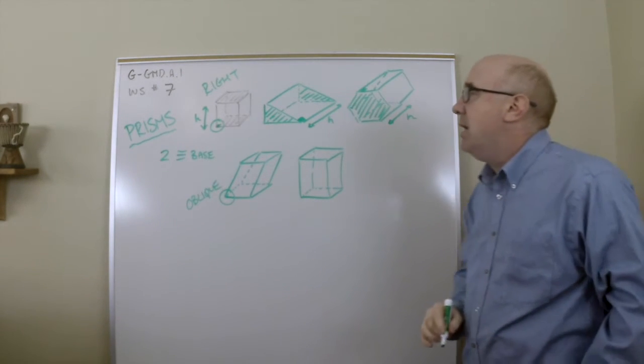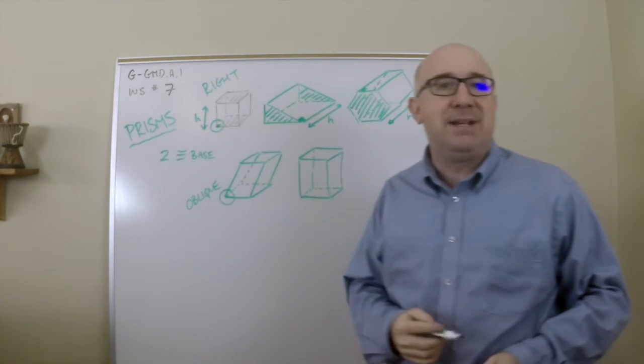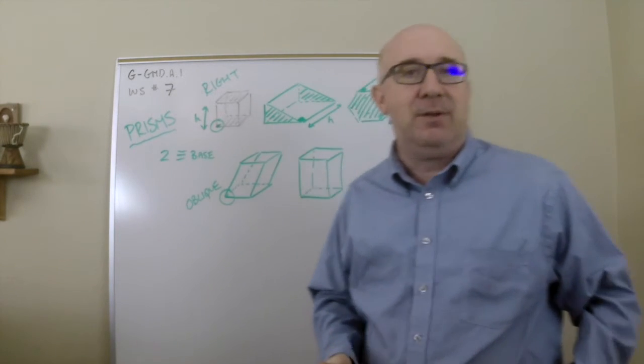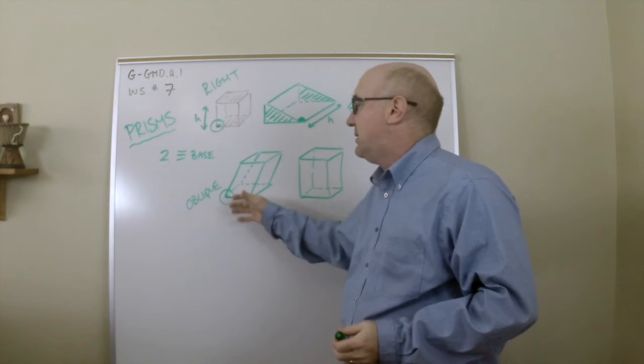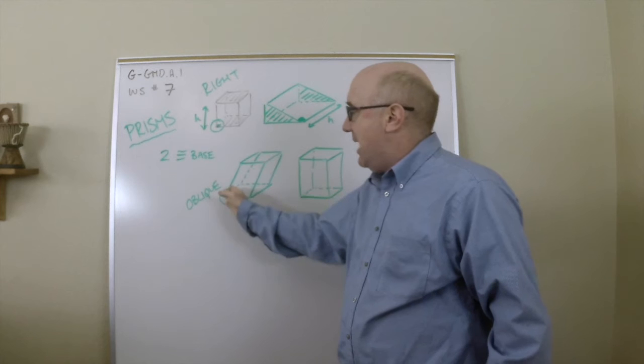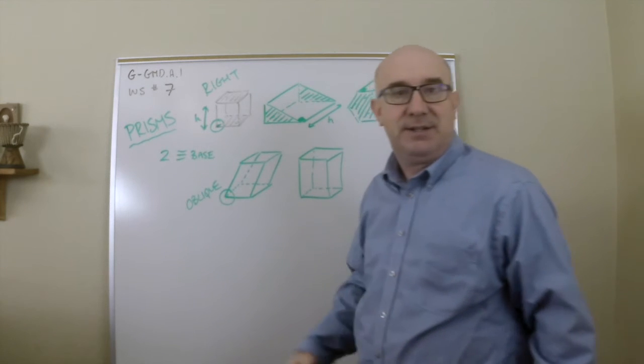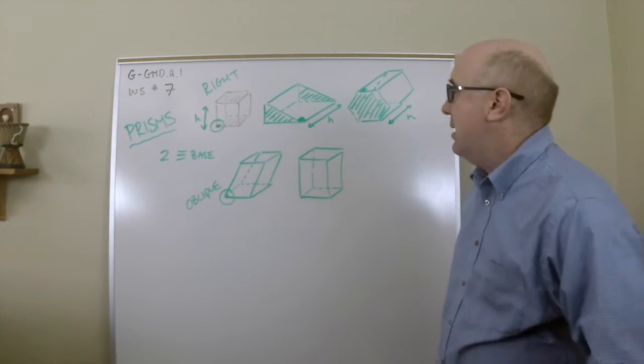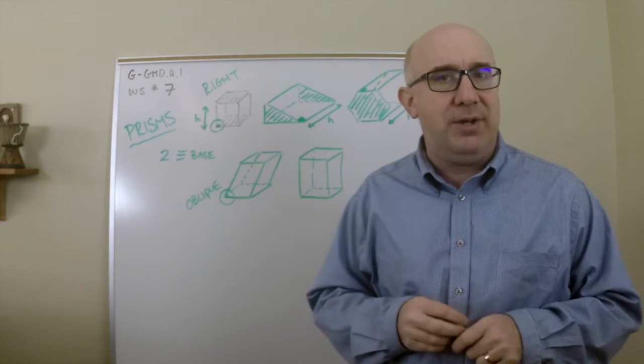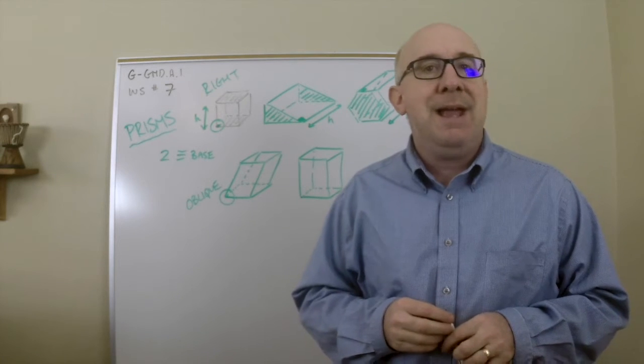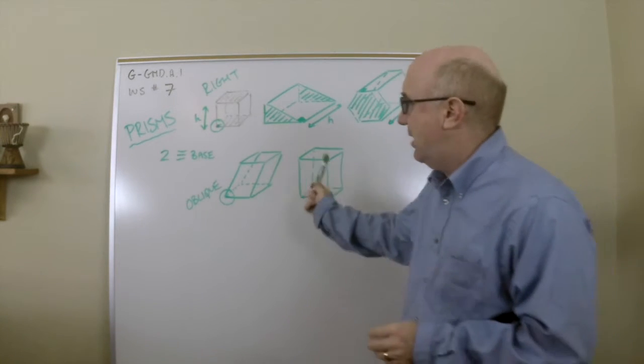Now just to show you an example of oblique. Oblique means not perpendicular. This is a prism as well, it has two identical bases, but the lateral edge is not perpendicular, it's at some other angle.